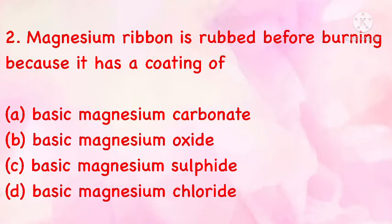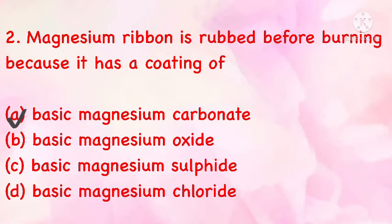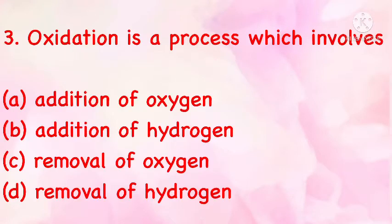Magnesium ribbon is cleaned before burning because it has a coating of: (a) basic magnesium carbonate, (b) basic magnesium oxide, (c) basic magnesium sulfide, (d) basic magnesium chloride. The correct answer is (a): basic magnesium carbonate.